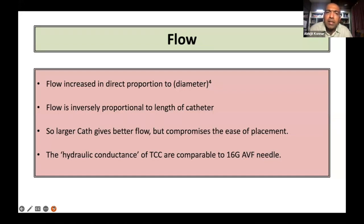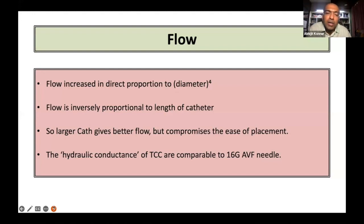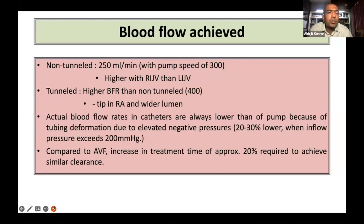The importance of the catheter is its use for dialysis, so the flow of blood through these catheters is extremely important. We all know flow is increased and is in direct proportion to the fourth power of diameter. Flow is inversely proportional to the length of the catheter. Larger catheters typically give better flow, but there are compromises on the ease of placement. The hydraulic conductance of tunnel catheters is comparable to a 16G AV fistula needle. The non-tunnel catheters achieve a flow of around 250 ml per minute when the prescribed pump speed is around 300 ml per minute, and it's higher in the right IJV as compared to the left because it has to travel shorter distances.